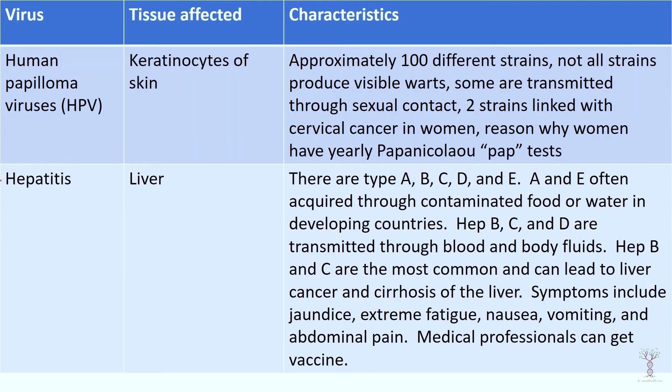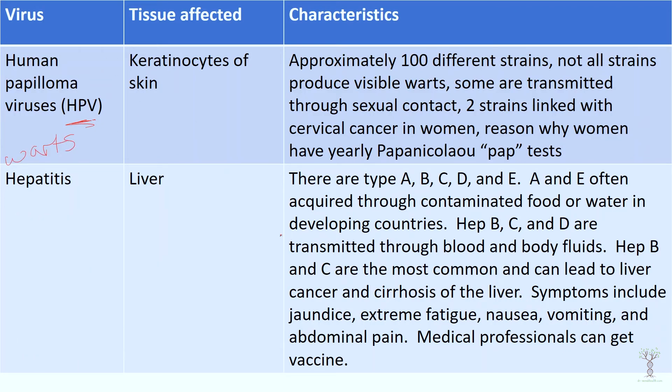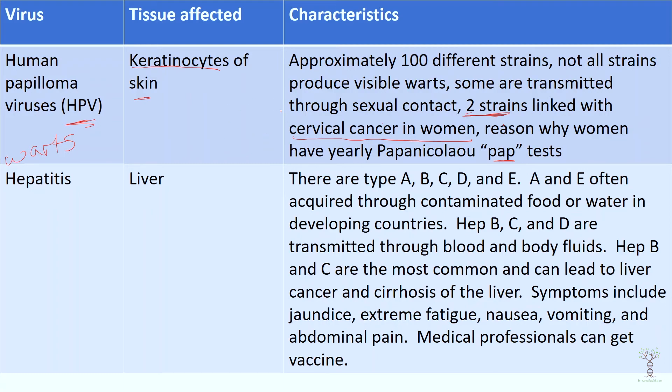Human papillomavirus causes warts. There are at least 100 different strains of human papillomaviruses and they infect specifically the keratinocytes in the skin. They can be transmitted through skin contact or through sexual contact. Two strains of HPV have been linked with cervical cancer in women — this is why women should have pap tests to make sure there is no dysplasia going on. Interestingly, those two strains that can cause cervical cancer don't cause warts to form. So just because you've never had actual warts doesn't mean you haven't had HPV. HPV is very prevalent.